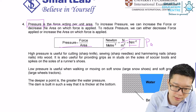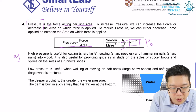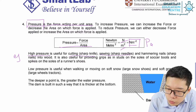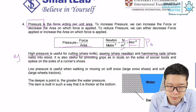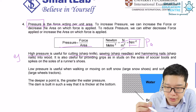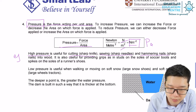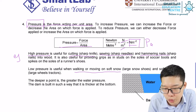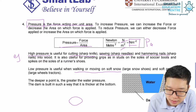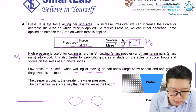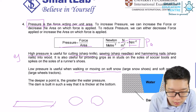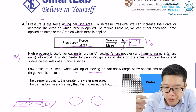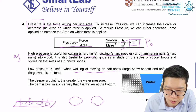For high pressure examples, we have knives, screws, and nails. And we also have low pressure examples — for example, walking or moving in soft snow. Instead of having tires, we would use a larger area to reduce the pressure in case we are trapped in soft ground.